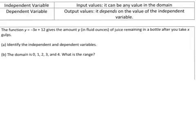We're going to go ahead and try this first example. The function Y equals negative 3X plus 12 gives the amount Y in fluid ounces of juice remaining in a bottle after you take X gulps. So, it says to identify the independent and dependent variables. So, it basically tells you everything up here. The independent variable is the input value. The dependent is the output.